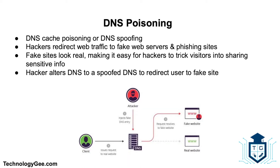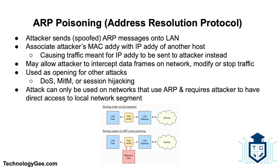DNS poisoning, also known as DNS cache poisoning or DNS spoofing, is a highly deceptive cyber attack in which hackers redirect web traffic towards a fake web server and phishing websites. These fake sites typically look like the user's intended destination, making it easy for hackers to trick visitors into sharing sensitive information. Hackers alter the domain name system so that when a legitimate user goes to a website, instead of landing on their intended destination they end up at an entirely different website, usually without even knowing it.